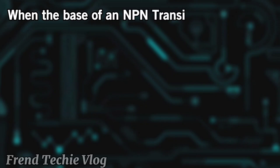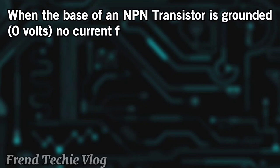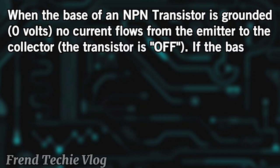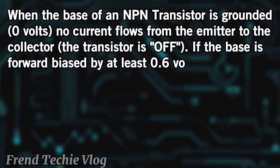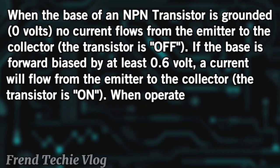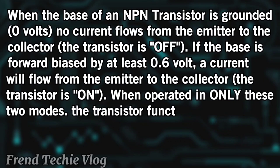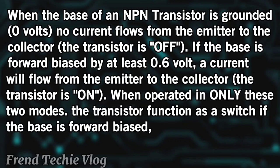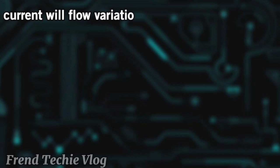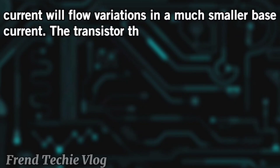When the base of an NPN transistor is grounded at 0 volts, no current flows from the emitter to the collector — the transistor is off. If the base is forward biased by at least 0.6 volts, a current will flow from the emitter to the collector — the transistor is on. When operated in only these two modes, the transistor functions as a switch. If the base is forward biased, emitter-collector current will flow in proportion to variations in a much smaller base current.